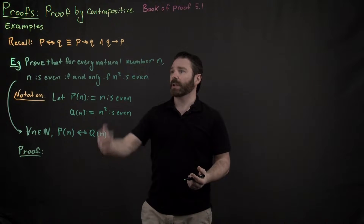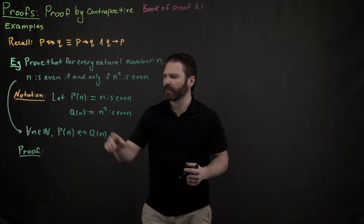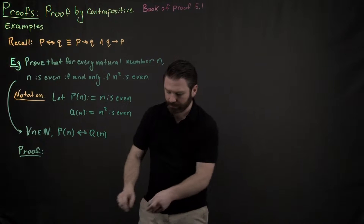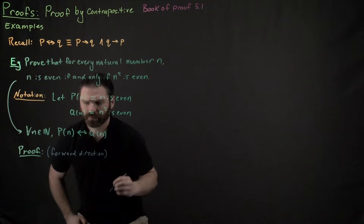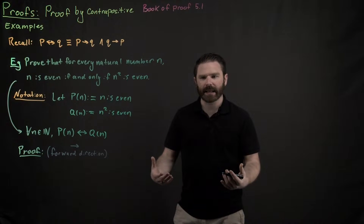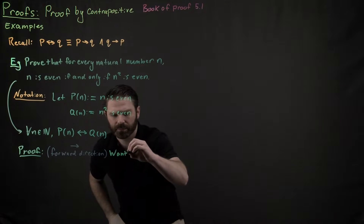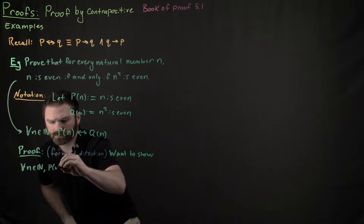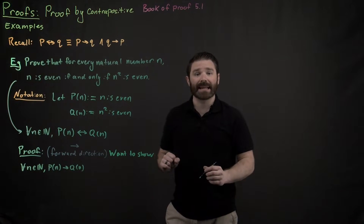For our very first step, we have to choose which direction — are we going to prove P implies Q first, or Q implies P first? I'm going to prove that P(n) implies Q(n). This is referred to as the forward direction, usually abbreviated with a forward arrow, indicating we want to show that n is even implies n squared is even.